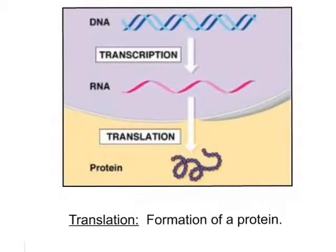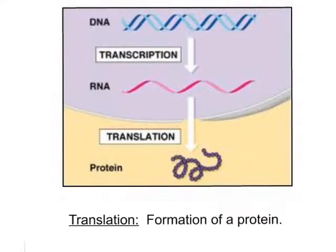Here is a simple diagram showing a eukaryotic cell nucleus where DNA goes through transcription to create RNA. Translation is the next process we're going to talk about — that is where messenger RNA creates a protein. So translation is the formation of a protein from messenger RNA.